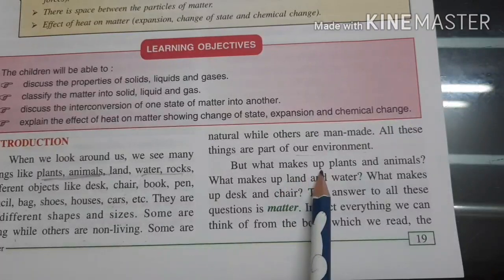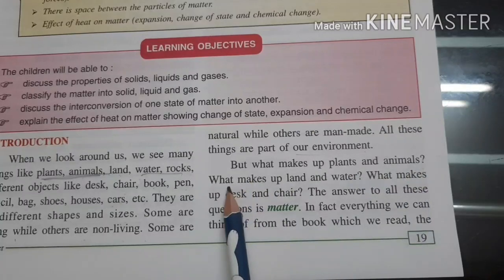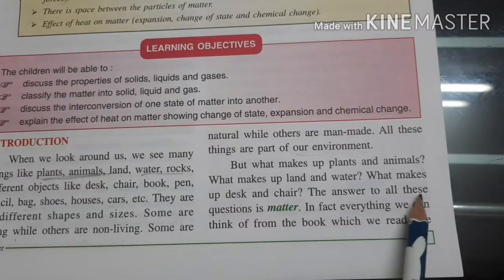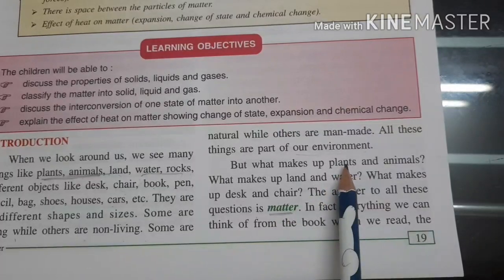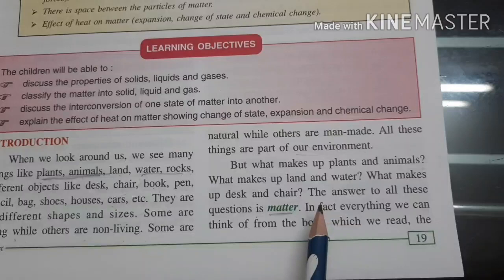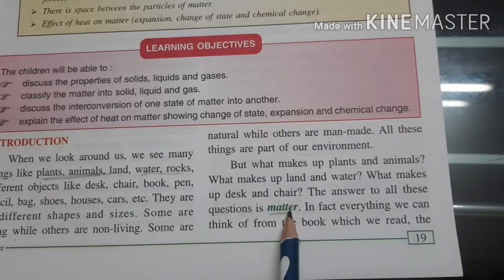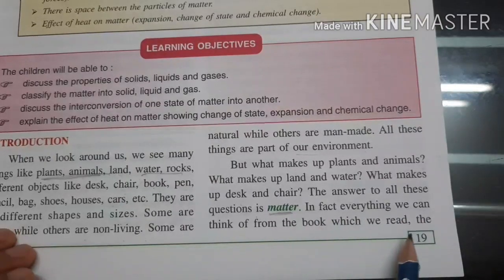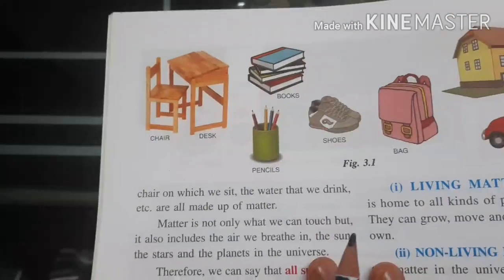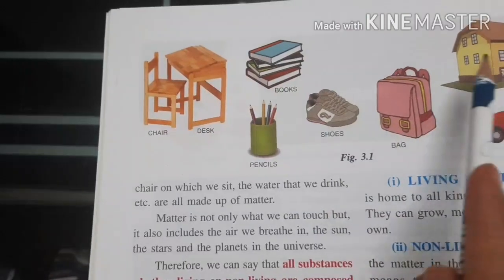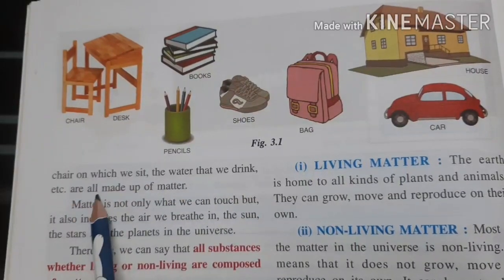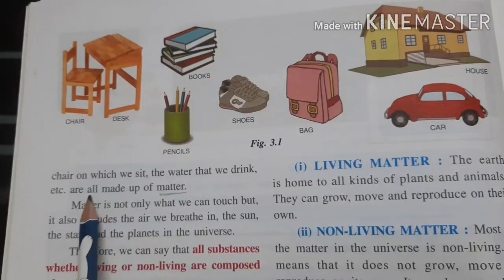But what makes up plants and animals? What makes up land and water? What makes up desks and chairs? The answer to all these questions is matter — how plants are made, how animals are made, how water is made, how desks and chairs are made — everything is made with a particular substance, and that substance is called matter.